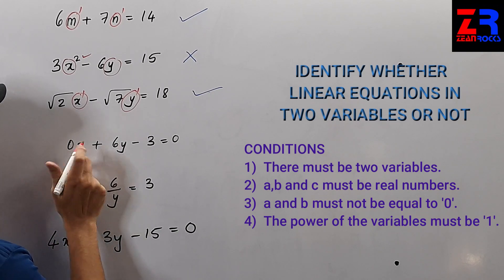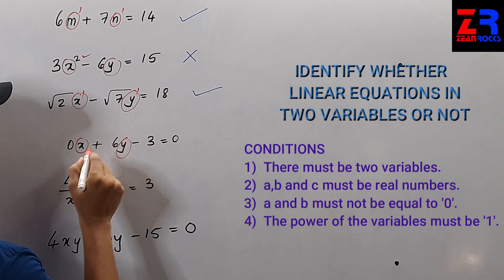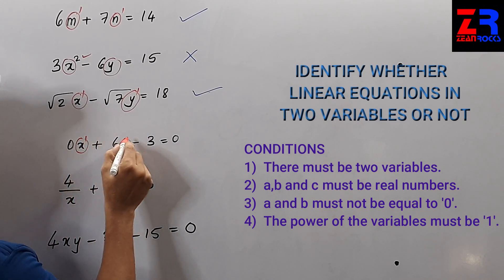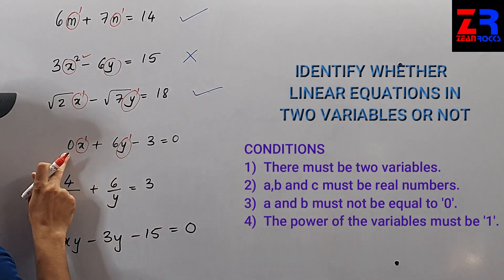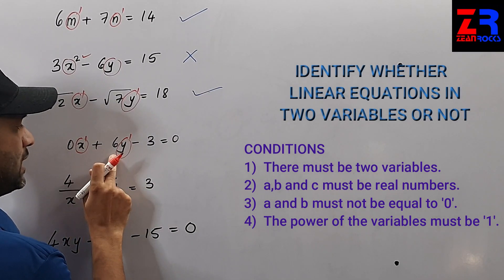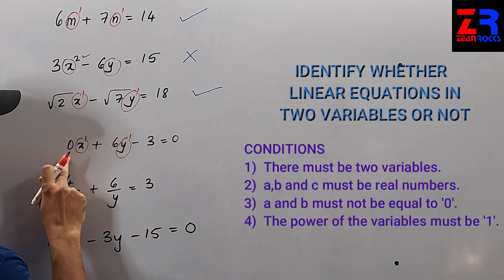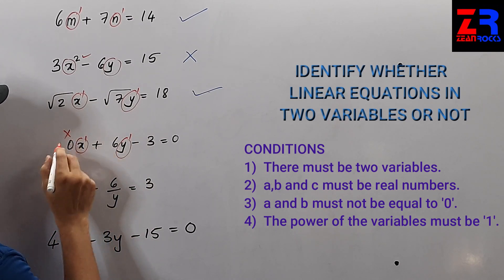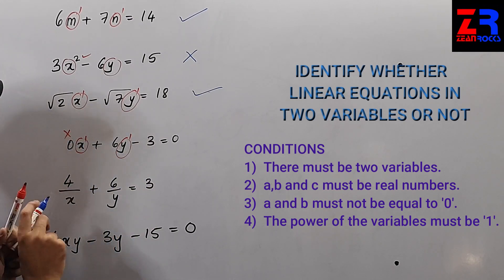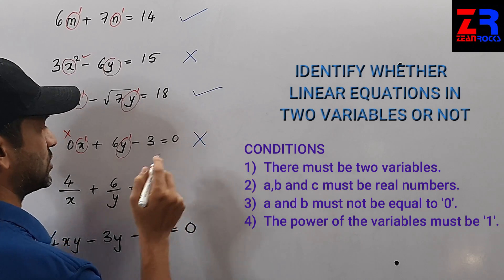Next: x and y — there are two variables and the power is also 1, but our condition is a and b must not be equal to 0. Here a is equal to 0, so this is not a linear equation in two variables.